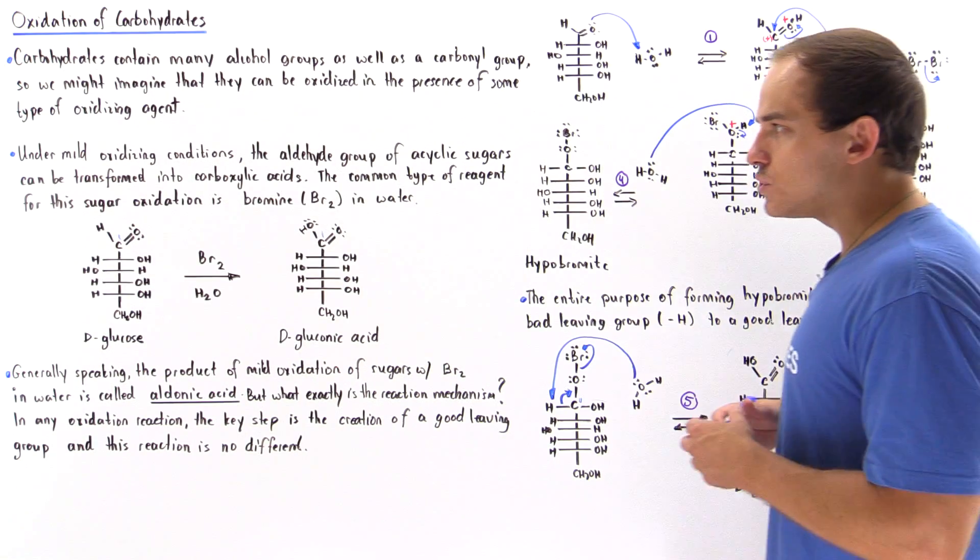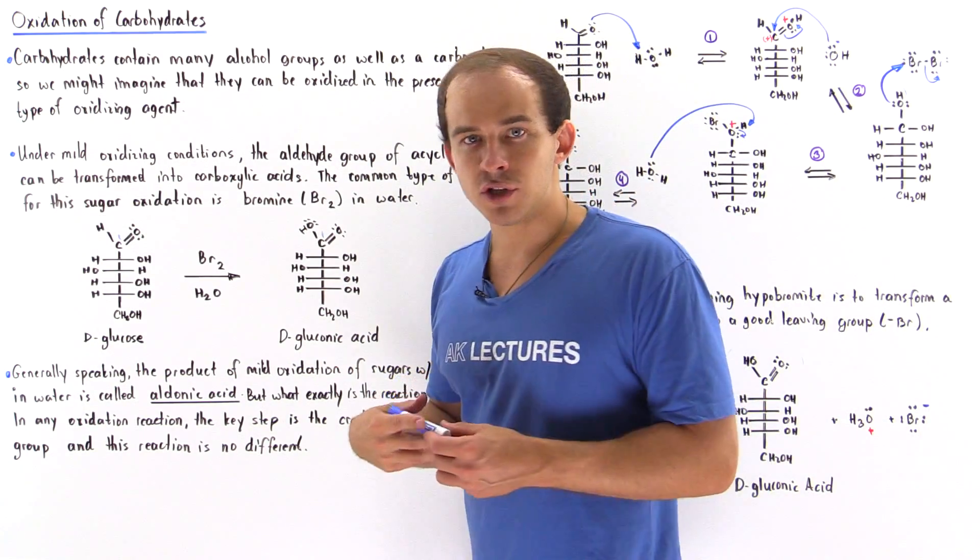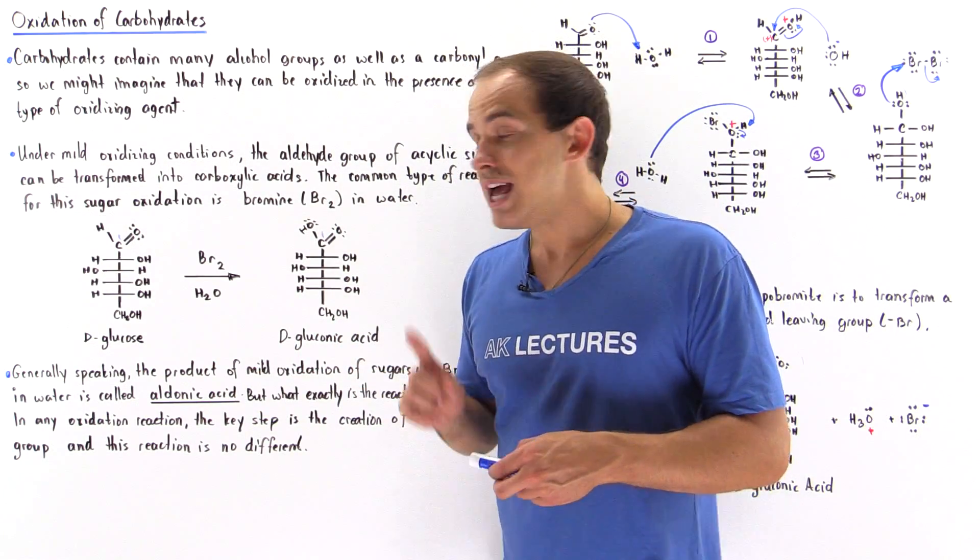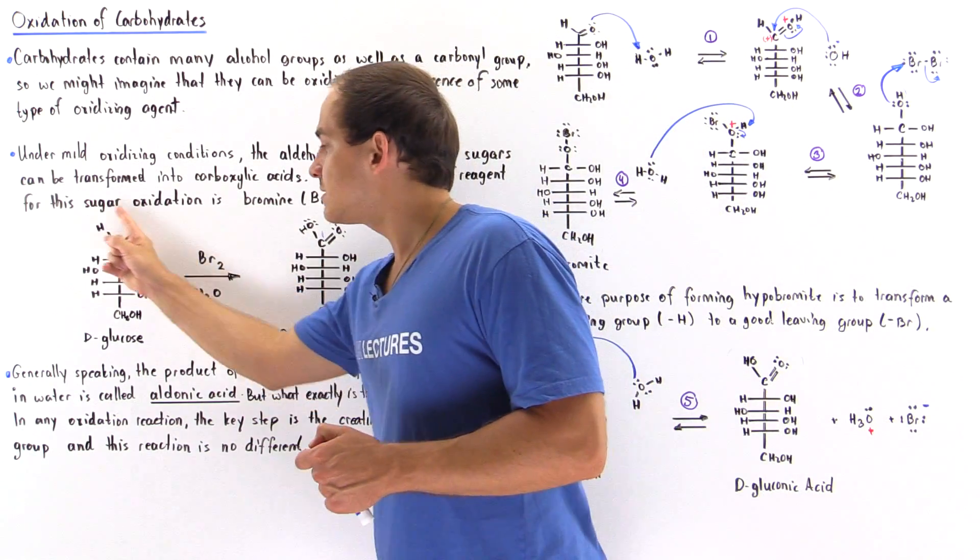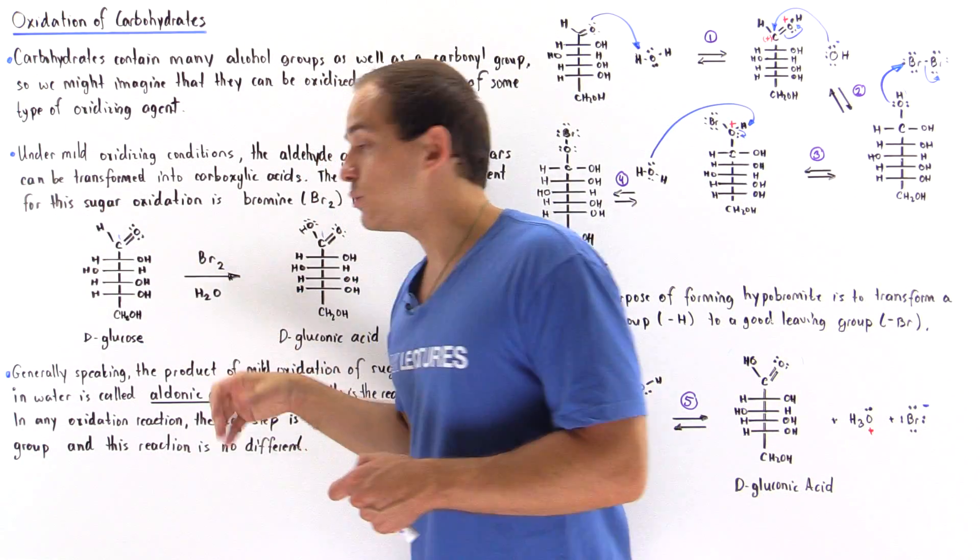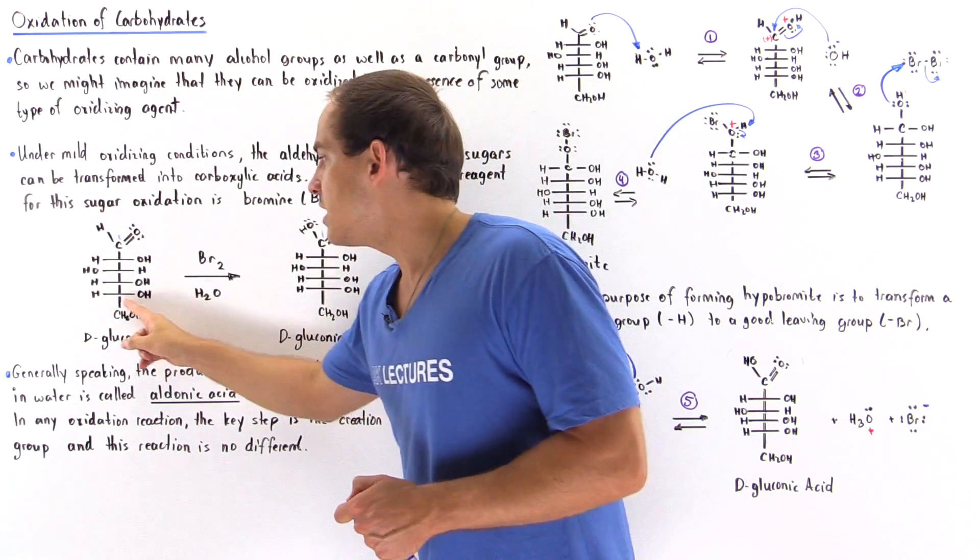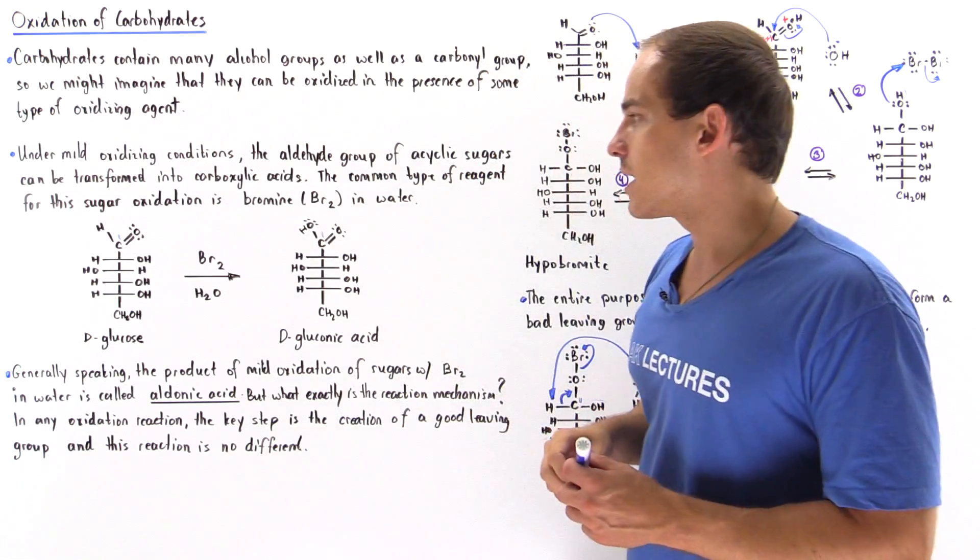But if we would have used some other type of condition, a more vigorous condition, not only could we actually oxidize this aldehyde, we can also oxidize this primary alcohol on the bottom.